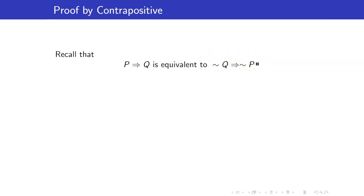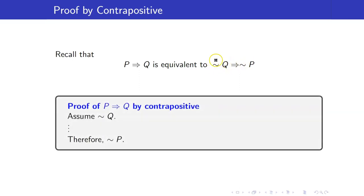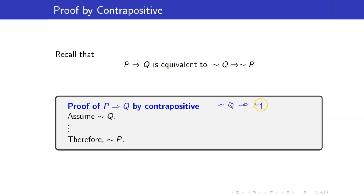How does the proof by contrapositive work? We should start with assuming the negation of your original conclusion — assume not Q is true, and then show that not P is true. Take note that this just means we are proving not Q implies not P by direct proof.